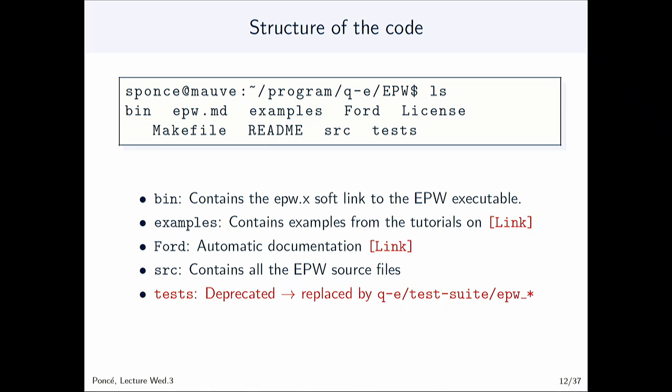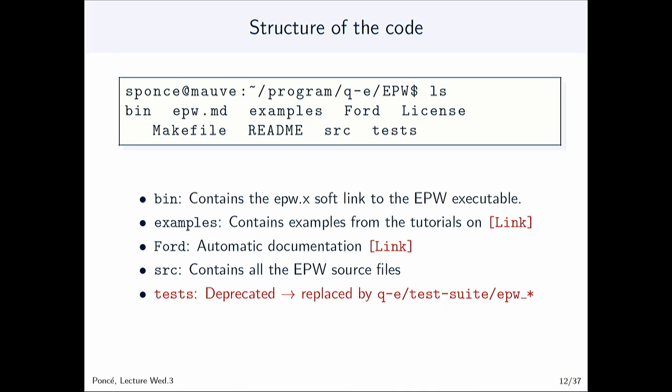You also have a README with extra information, a makefile for compiling the code, and the license. The most important part is obviously the source. The first main file is EPW.f90, which contains a lot of stuff but mainly calls to various routines.